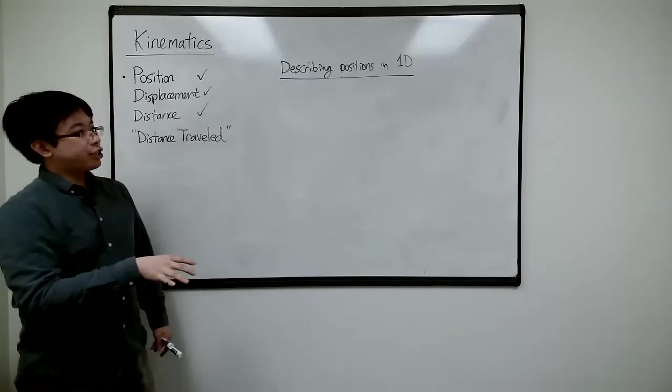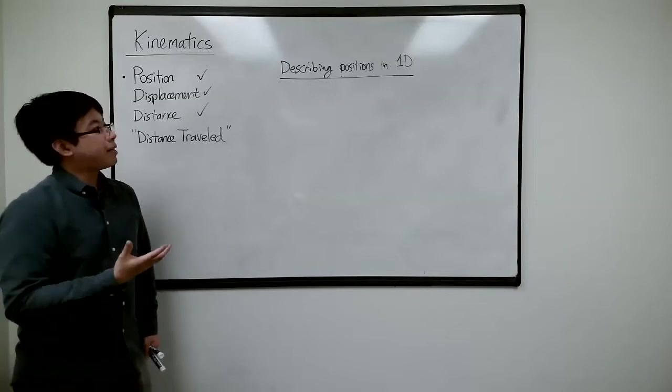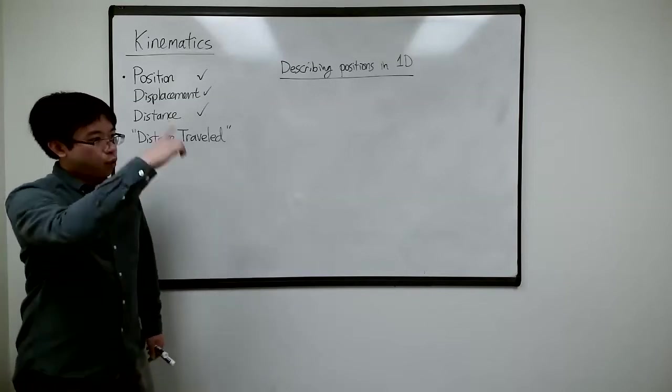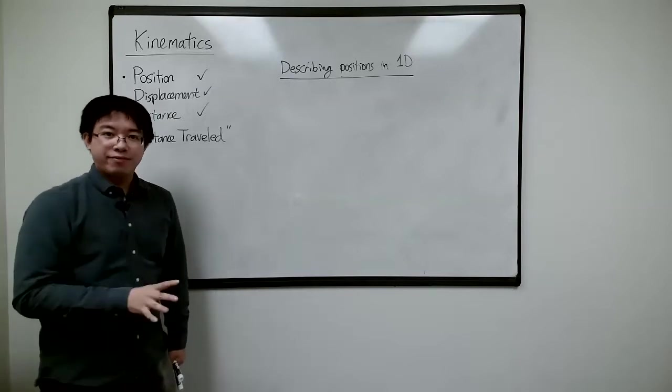Earlier we've shown in two dimensions how to properly describe a position: you need a coordinate axis, you need an origin point, and then you describe it with a vector.